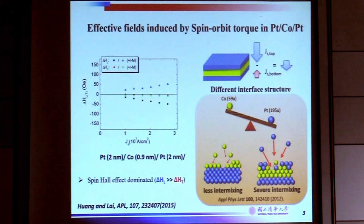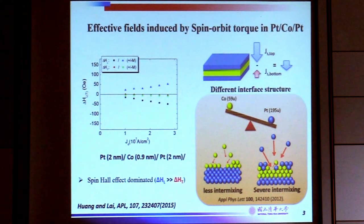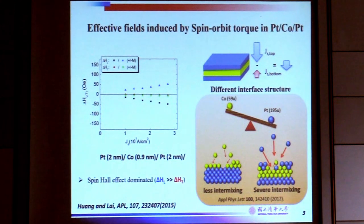It has been known that interface transparency is quite critical for spin current passing through structures. We believe that because of this different interface structure, we have more spin current coming from the top through this interface. Now, as I mentioned, we can use platinum to switch the cobalt layers.